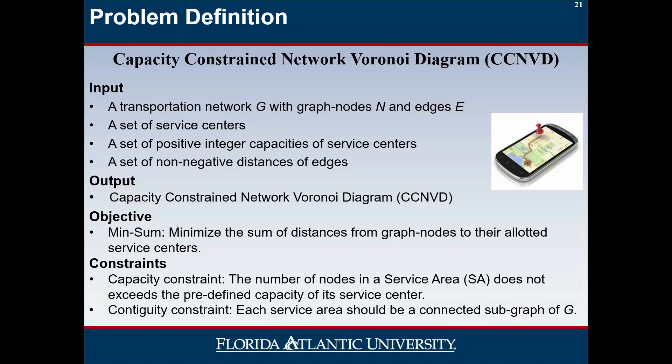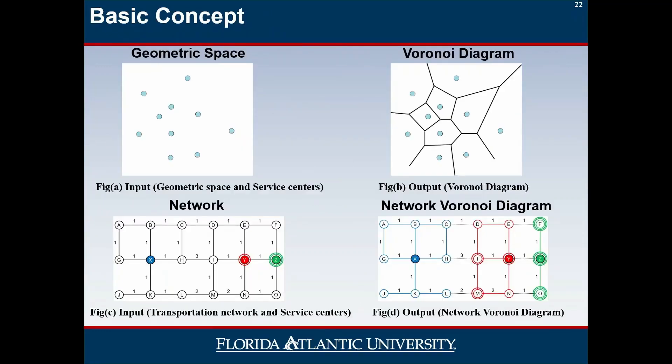Let me introduce the concept of the Voronoi diagram. Given a set of service centers, the Voronoi diagram partitions the space to minimize the distance between a service center and geographic locations. Using the Voronoi diagram, if you know your current location and service area, you can quickly find the nearest service center. In a transportation network, we use shortest path computation to partition the network into service areas.